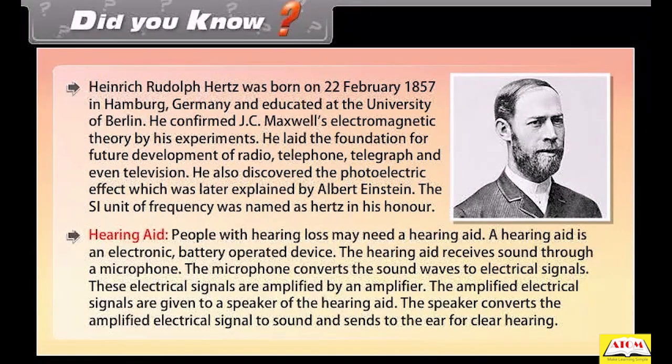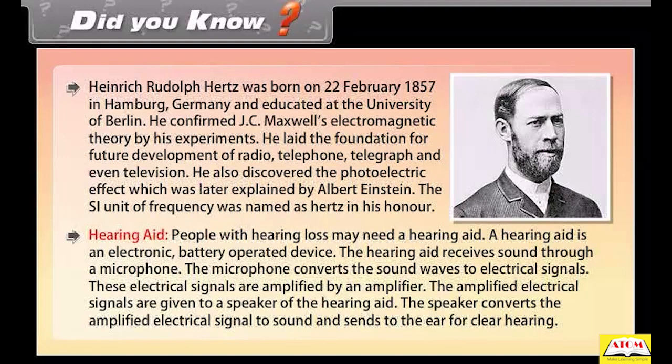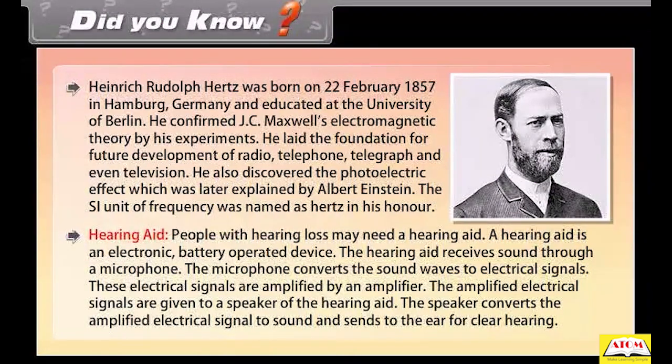Hearing aid. People with hearing loss may need a hearing aid. A hearing aid is an electronic battery operated device. The hearing aid receives sound through a microphone. The microphone converts the sound waves to electrical signals. These electrical signals are amplified by an amplifier. The amplified electrical signals are given to a speaker of the hearing aid. The speaker converts the amplified electrical signal to sound and sends to the ear for hearing.